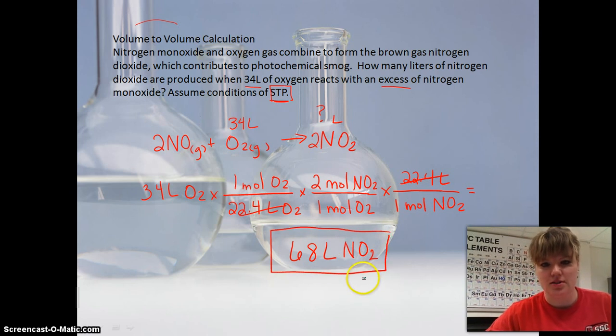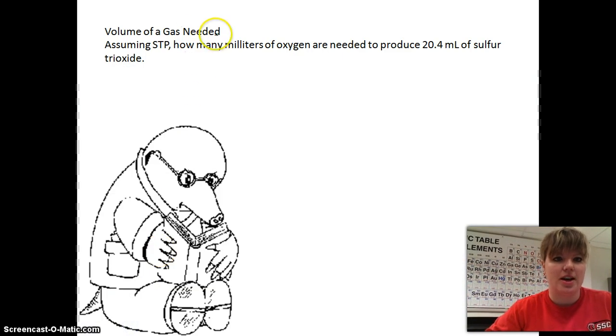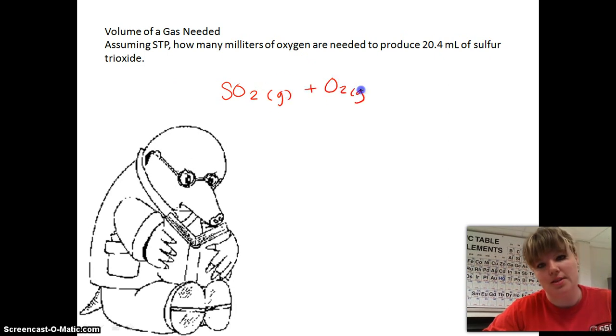So those are pretty easy. So the last one deals with if we're looking for the volume of gas needed. So again, we could use the 22.4. But showing you in that last one, you can almost assume since 22.4 is going to cancel out, we can almost eliminate that step. So how many milliliters of oxygen is needed to produce 20.4 milliliters of sulfur trioxide? So our equation is SO2 gas plus O2 gas, and we're going to get sulfur trioxide here, gas.